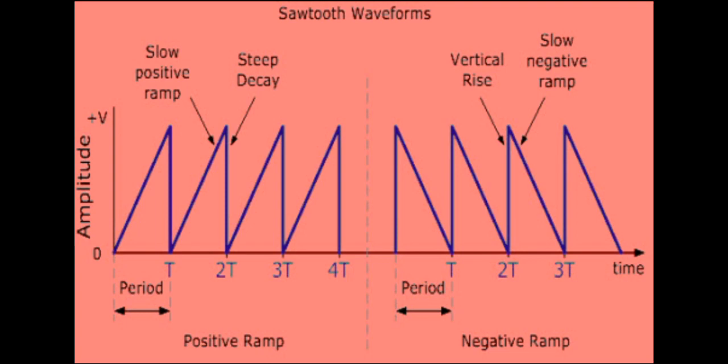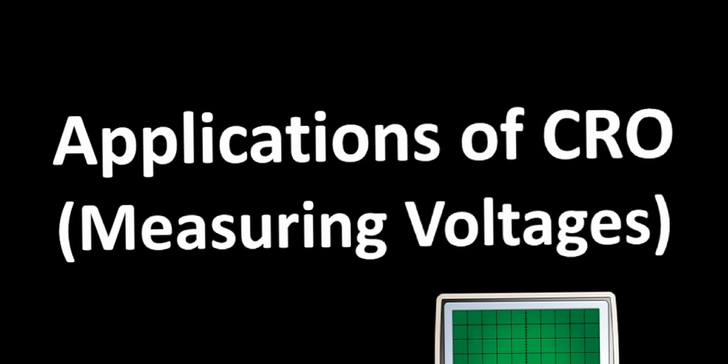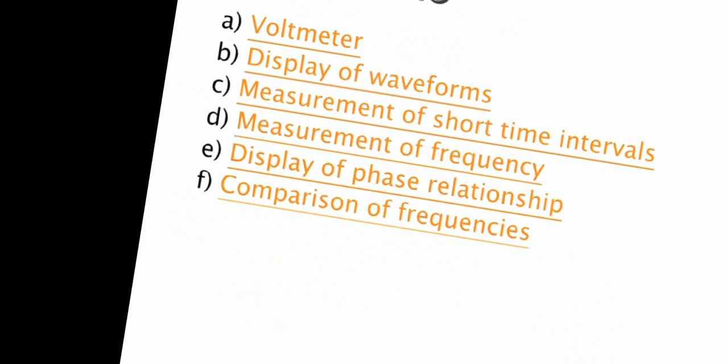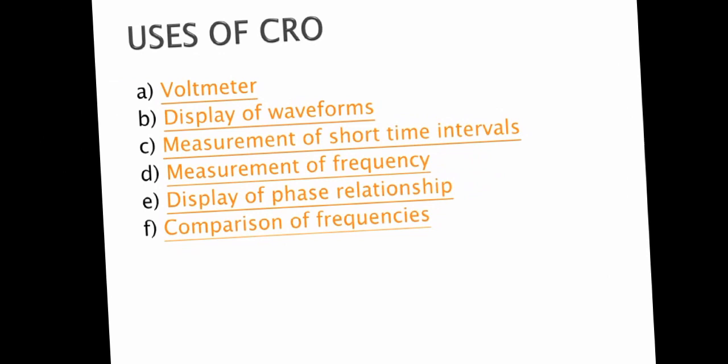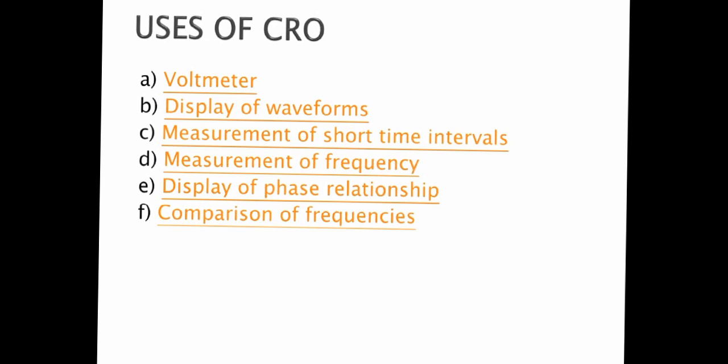At the end, you will see the applications and uses of the cathode ray oscilloscope. It is used as a voltmeter, for display of waveforms, measurement of short time intervals, measurement of frequency, display of phase relationships, and for comparison of different frequencies.